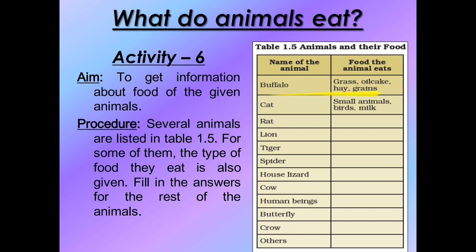Let's look at the first animal - buffalo. What does buffalo eat? Buffalo eats grass, oil cake, hay, and grains. Now what do you mean by oil cake? Oil cake is the byproduct remaining after oil is extracted from seeds like til (sesame), mustard, linseed, and flax.